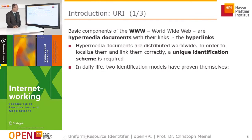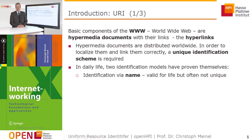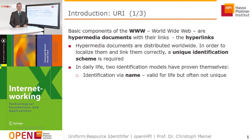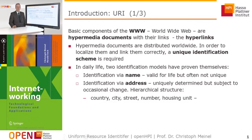If we look at our social life, there are two identification models that are very popular. The first identification is done by names. Each person has a name and if we talk to each other, we use the name of the other to directly identify our partner. This is very common and used all over the world. A little problem is there are many persons with the same name, so a name often does not provide a unique identification.